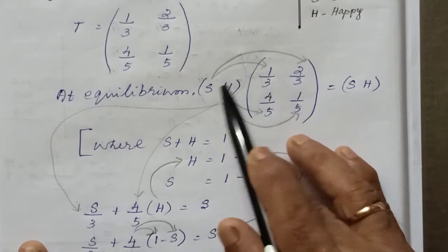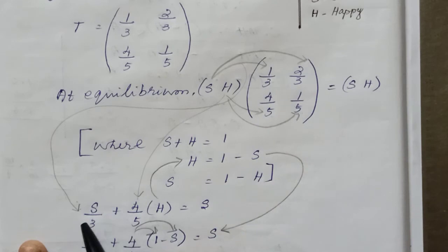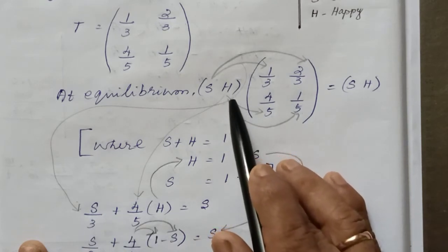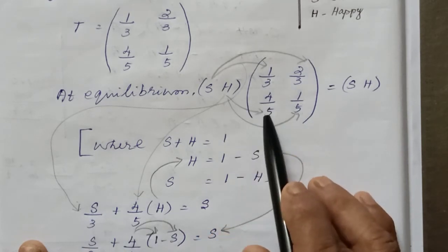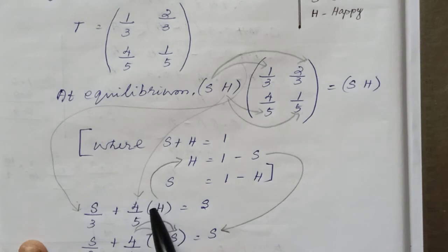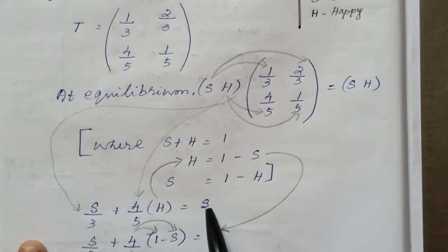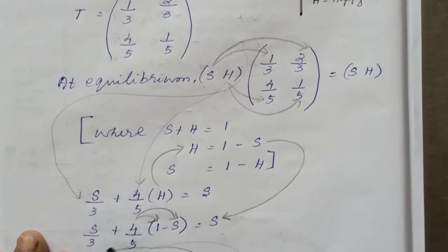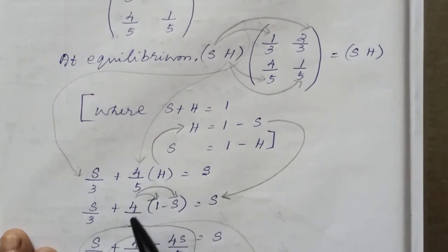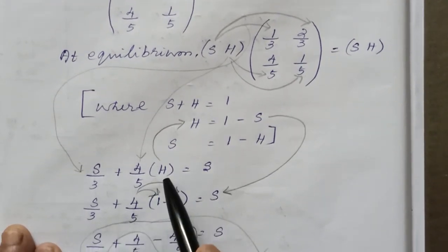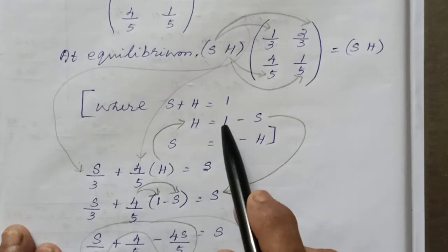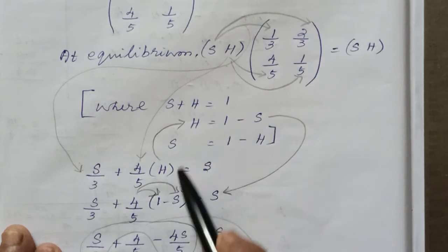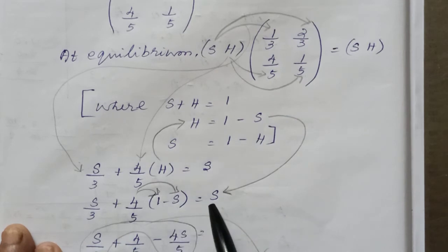S times 1/3, then 1 times S gives S by 3, then 4 by 5 into H equals S. So S by 3 plus 4 by 5, and instead of H we are going to substitute 1 minus S, equal to S.